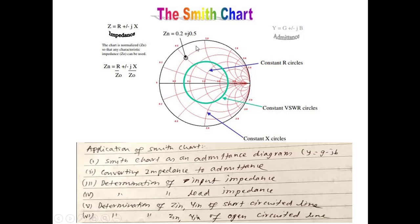Next is the Smith chart. It is a combination of two sets of circles: R circles and X circles, as shown in the figure. Combining the R circles and X circles produces a Smith chart. Applications include: using the Smith chart as an admittance diagram, converting impedance to admittance, determination of input impedance, determination of load impedance, determination of input admittance, analysis of short-circuited lines, and determination of Zin and Yin for open-circuited lines.